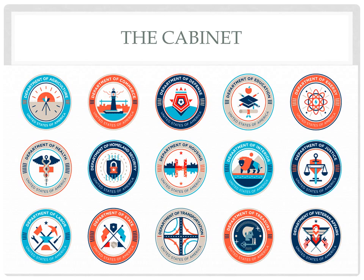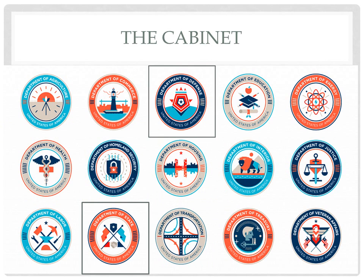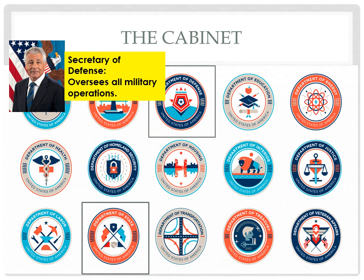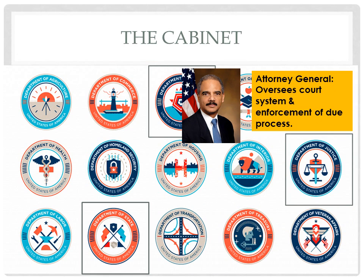The president is only one man, so to enforce and implement policies he must rely heavily on his cabinet, comprised of 15 departments today. The Department of State — where the Secretary of State handles all diplomatic relations with foreign countries and regulates foreign policy (John Kerry is the current U.S. Secretary of State) — the Department of Defense, which controls all military policies (Chuck Hagel is the current Secretary of Defense), and the Department of Justice, the only department in which the leader is not given the title of secretary — the attorney general oversees the entire court system and the enforcement of due process at each level (Eric Holder is the current U.S. Attorney General).